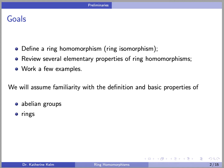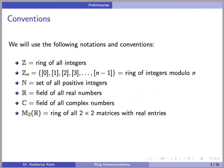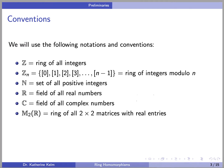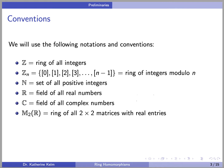We will assume familiarity with the definition and basic properties of abelian groups and rings. We will use the following notations and conventions: Z denotes the ring of all integers; for an integer n ≥ 2, Zn denotes the ring of integers modulo n; N denotes the set of all positive integers; R denotes the field of all real numbers; C denotes the field of all complex numbers; and M2 denotes the ring of all 2×2 matrices with real entries.